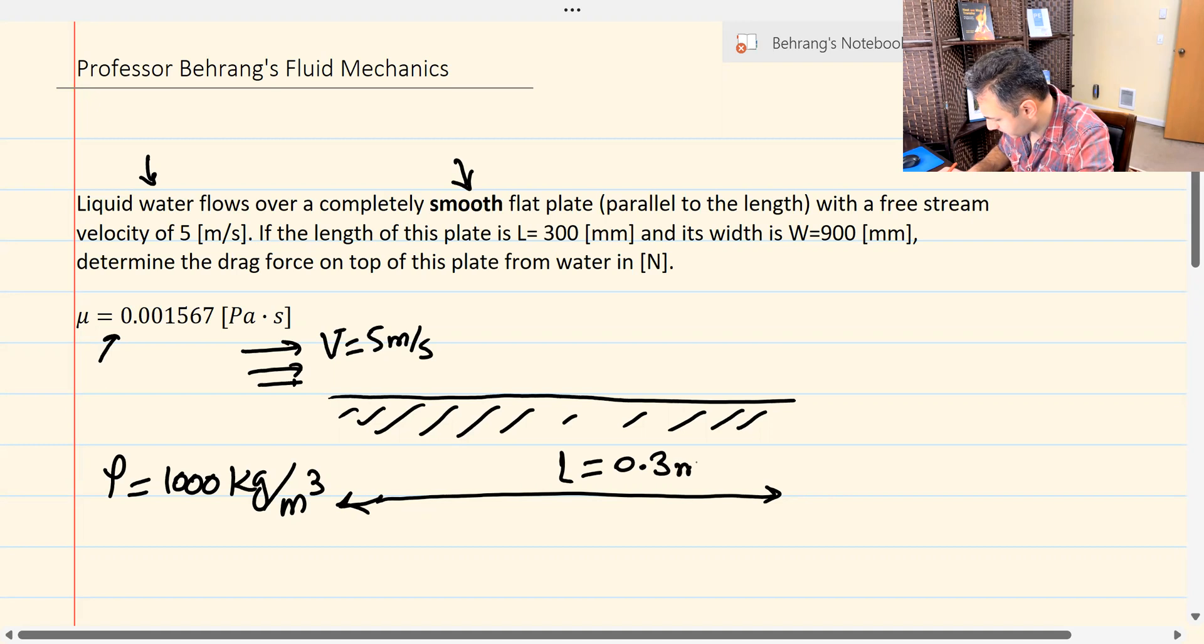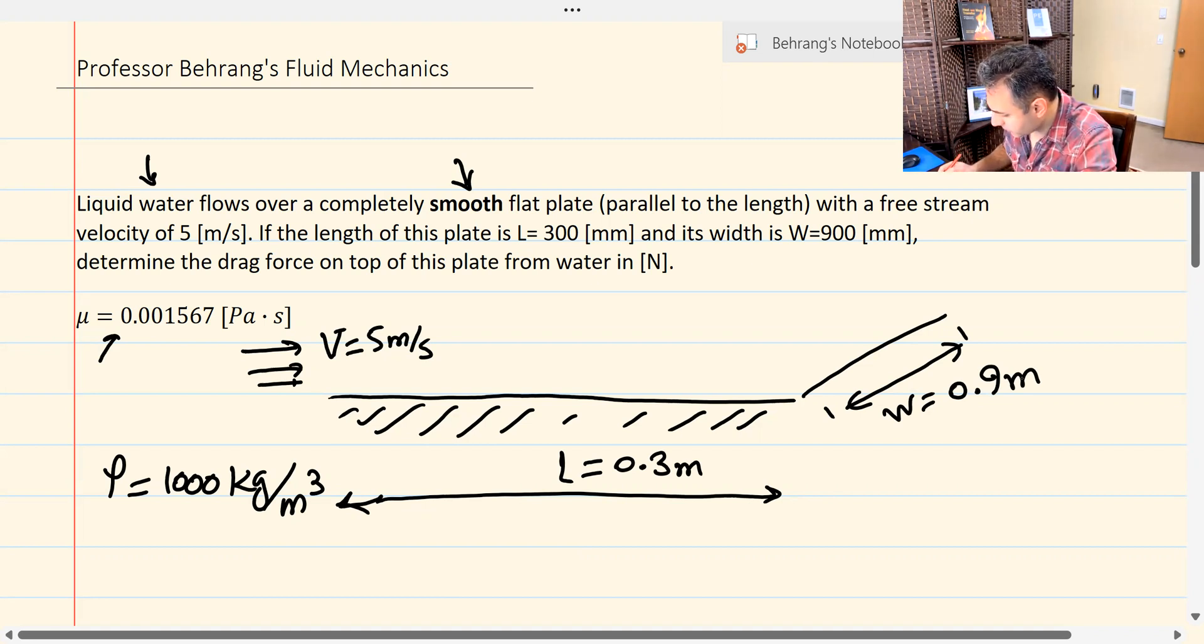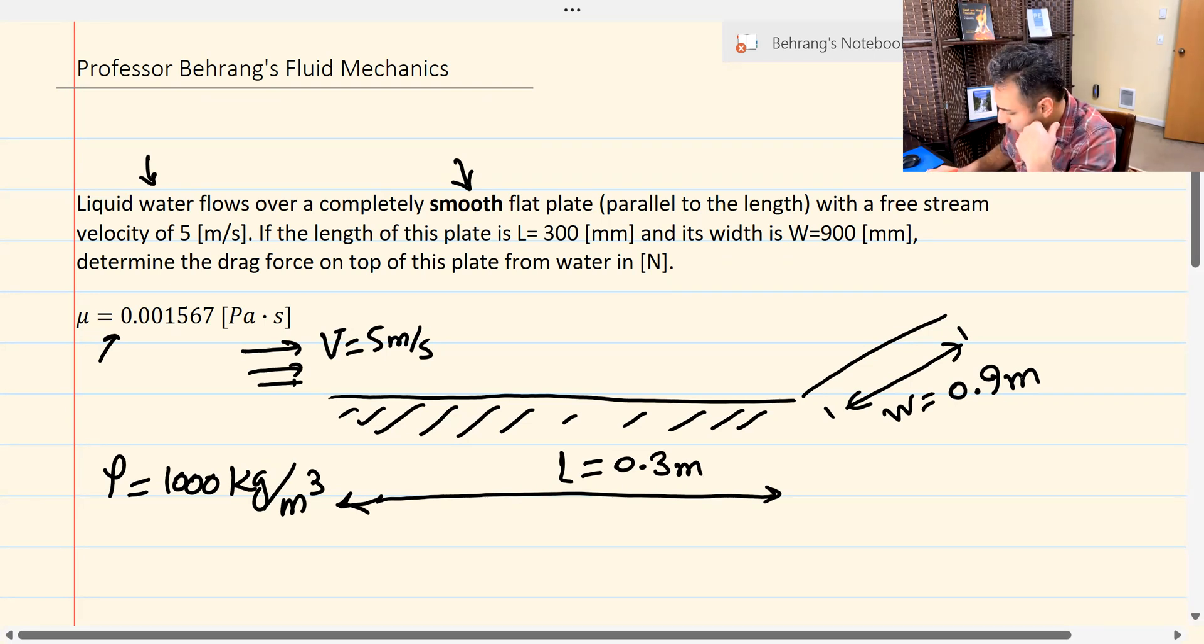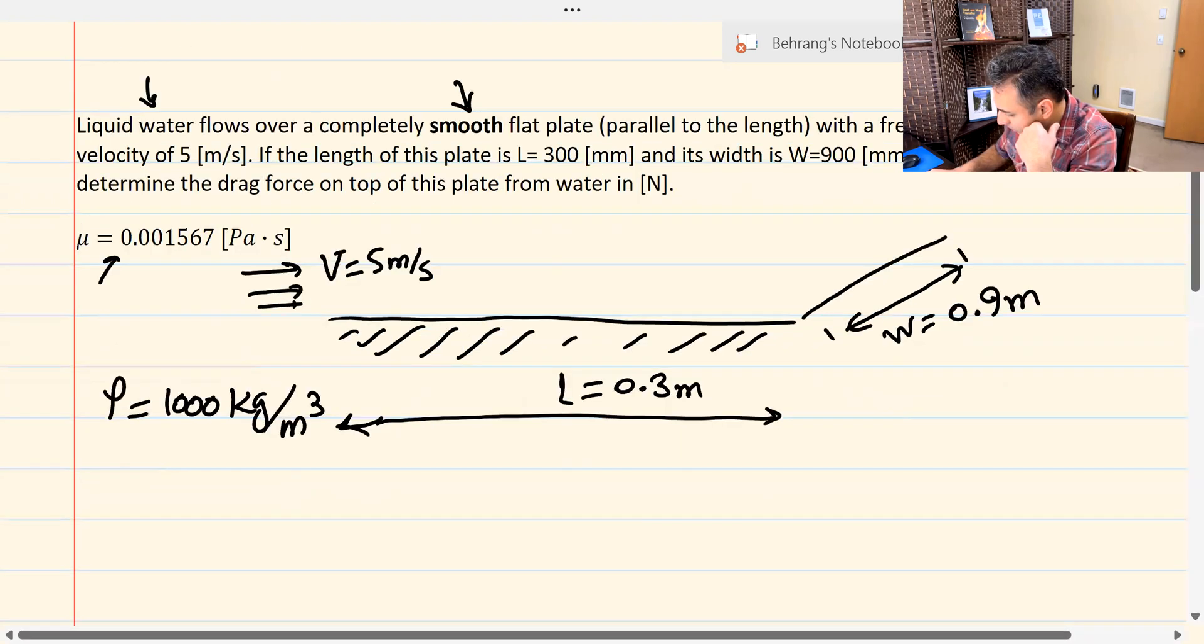L is given. The whole L of this plate is given as 300 millimeters. I have to convert it to meters to be able to solve this problem. And the width of this plate is given as W equals 0.9 meters. It's 900 millimeters. Because it is smooth and it doesn't say anything about the boundary layer being tripped or anything, my first step has to be calculating the Reynolds number.